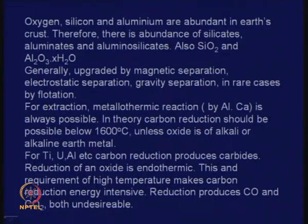Now there are many methods of upgradation: magnetic separation, electrostatic separation, gravity separation, and in rare cases, flotation is also applicable. This flotation may be a different kind from sulphide metallurgy. In sulphide metallurgy, the sulphide minerals float to the top and the gangue material goes down. When we have a mass of oxides which are very rich and the gangue content is low, we might try a flotation process where it is the gangue which floats up and the oxides you want do not float.